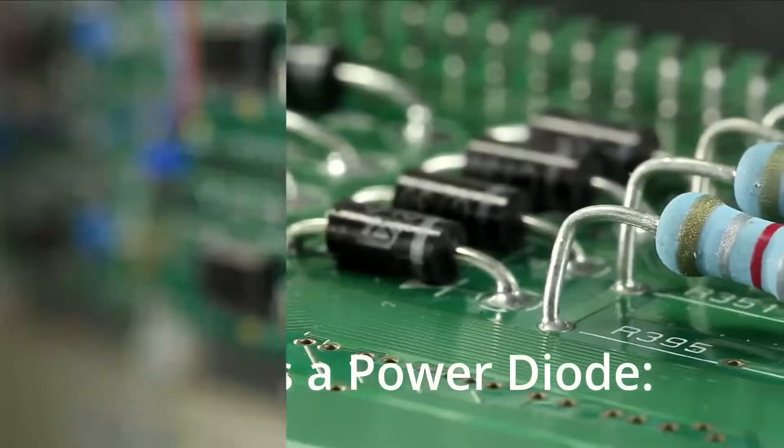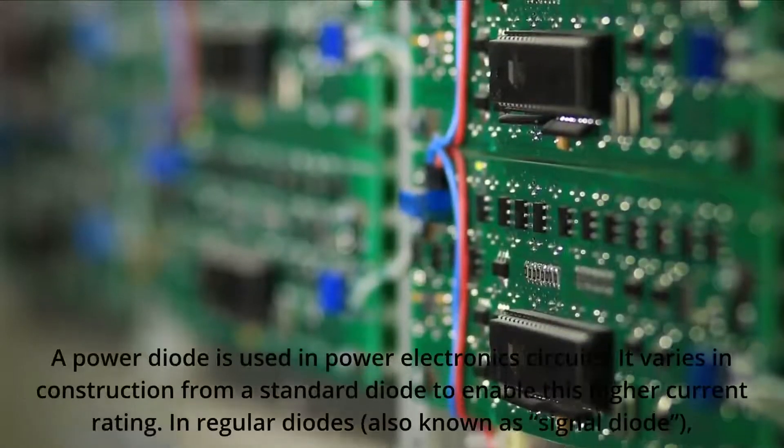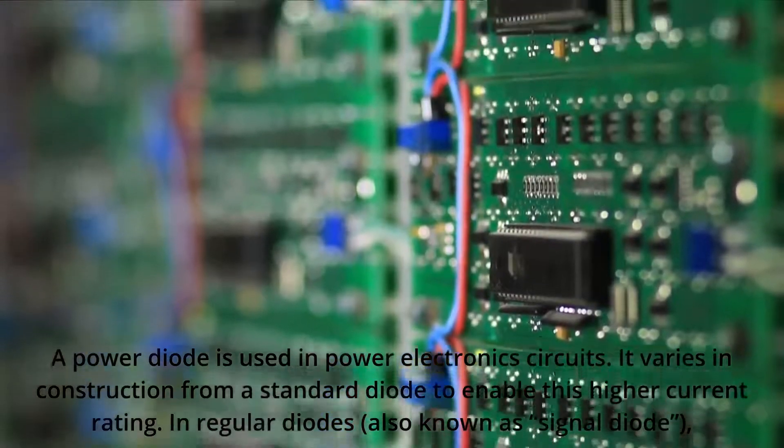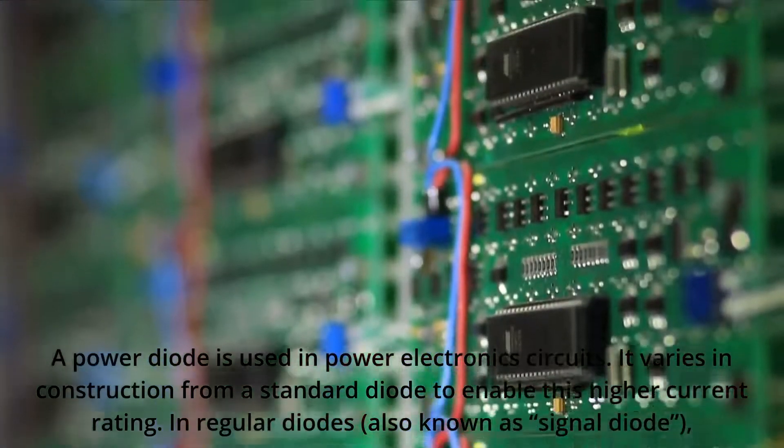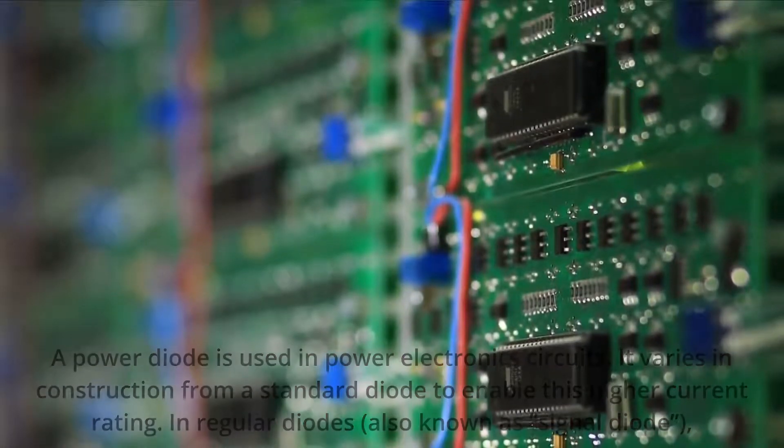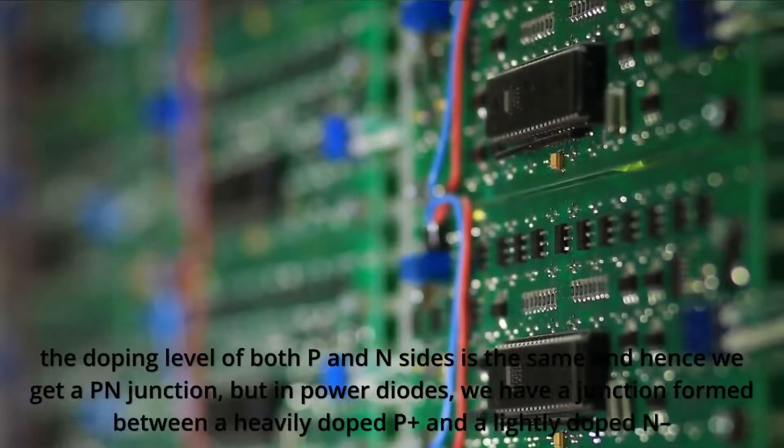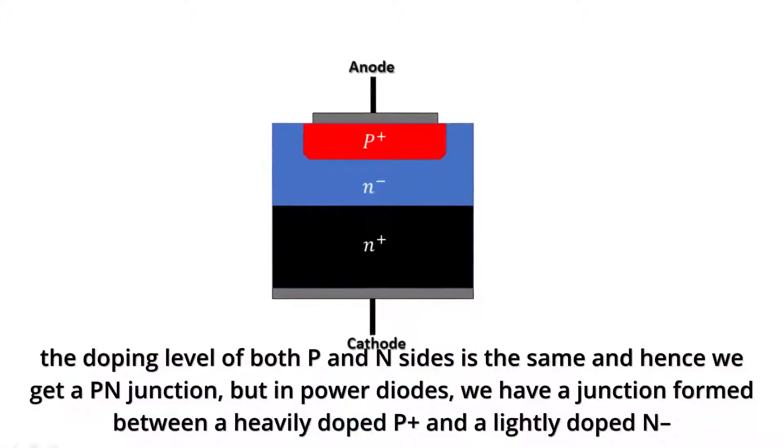What is a power diode? A power diode is used in power electronics circuits. It varies in construction from a standard diode to enable a higher current rating. In regular diodes, also known as signal diodes, the doping level of both P and N sides is the same and hence we get a PN junction.